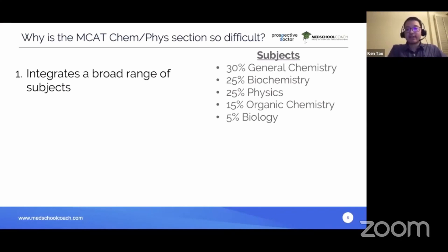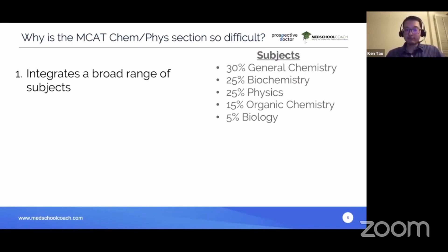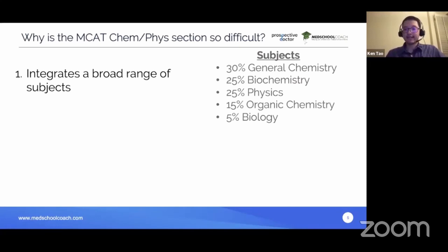Students aren't used to seeing multiple subjects in one passage, but this is something you can prepare for. As you review science content for the MCAT, don't just review one subject at a time. Rather than spending two weeks on physics and then two weeks on general chemistry, constantly cycle through all subjects so you're thinking about them simultaneously.